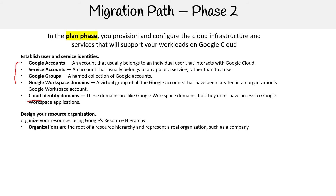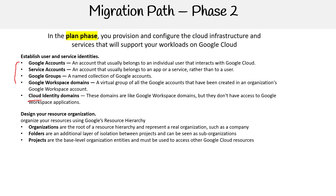Organizations are the root of a resource hierarchy and represent a real organization such as a company. Folders are an additional layer of isolation between projects that can be seen as sub-organizations. Projects are base-level organization entities and must be used to access other Google Cloud resources. Hierarchy architectures include environment-oriented, function-oriented, and granular access-oriented — these are covered in their own section because they're super important, and you'll see exam questions around resource hierarchies.